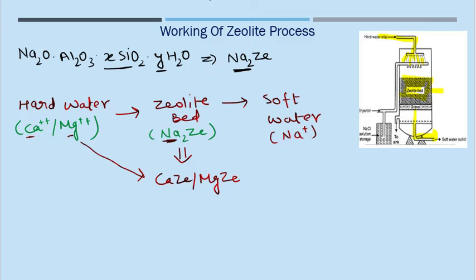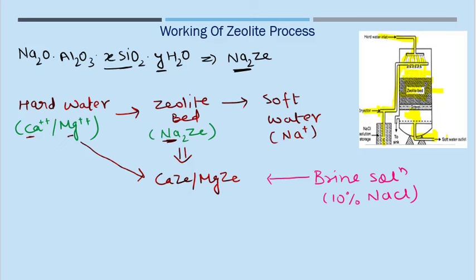Now we need to regenerate it, so the softener will work. The softening is done by brine solution — we call it a 10% NaCl solution. Hard water supply will be removed from soft water. The brine solution is injected; after applying it, there will be reactions which regenerate it. It will be converted back into sodium zeolite, and now it is available to soften water again.